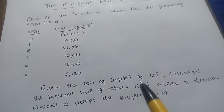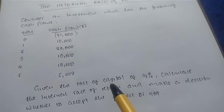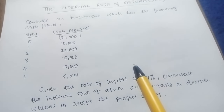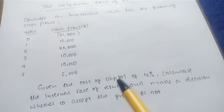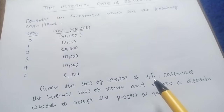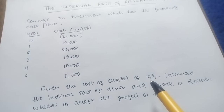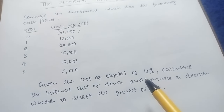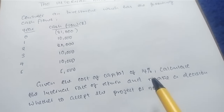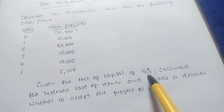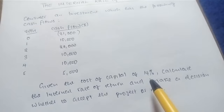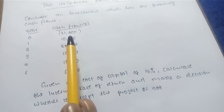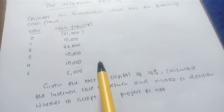Hello everyone, welcome to Finance with Medicine. In this video we're going to look at how to calculate the internal rate of return, better abbreviated as IRR. The internal rate of return is simply that rate that gives us zero net present value. In other words, it's simply an extension of the net present value, but in this case we are looking for the rate or the cost of capital that gives us zero net present value.